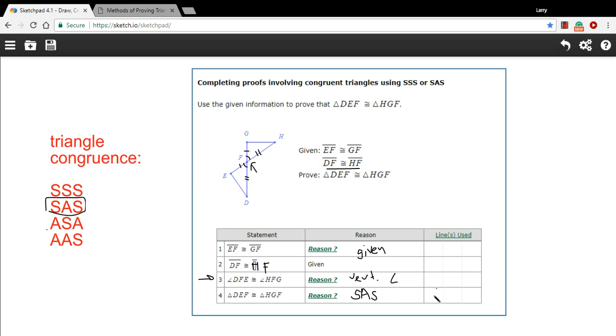And in this case, I think we need to indicate the lines that we used here because we need to indicate the lines where we showed that each of the sides and the angles were congruent. And that's all three of the previous lines. So you'd put one, two, and three in here. So that is a little bit of work with a proof about triangle congruence.